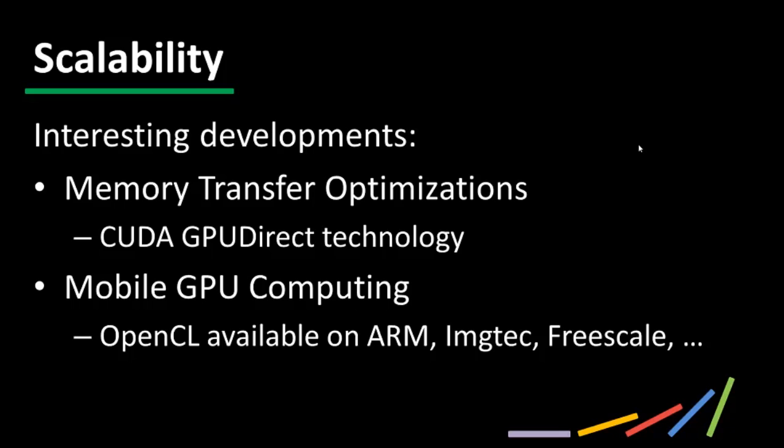The second development is mobile GPU computing. OpenCL has quickly become the most pervasive way to do GPU computing on mobile devices, including smartphones and tablets. Companies like ARM, Imagination Technologies, Freescale, Qualcomm, Samsung, and others are all enabling their mobile GPUs to run OpenCL. There are more mobile devices sold each year than PCs, so this is a huge community beginning to put its support behind OpenCL.